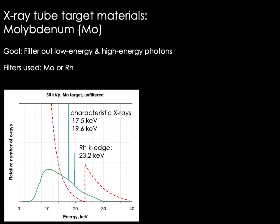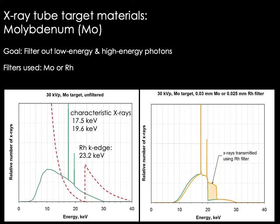Using a rhodium filter on an x-ray beam produced from a molybdenum target: the k edge of rhodium is slightly higher than molybdenum at 23.2 keV, meaning we retain more of the high-energy photons. Clinically, a rhodium filter is used for denser or thicker breasts when these higher-energy photons are needed to adequately penetrate the breast tissue. The unfiltered spectrum with a molybdenum filter is shown in green and the rhodium-filtered spectrum in orange.